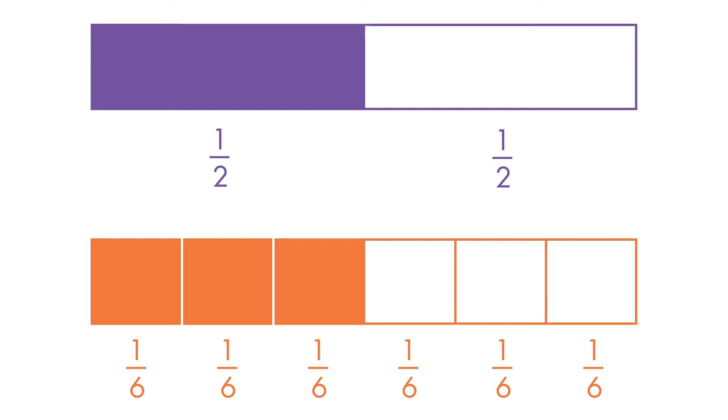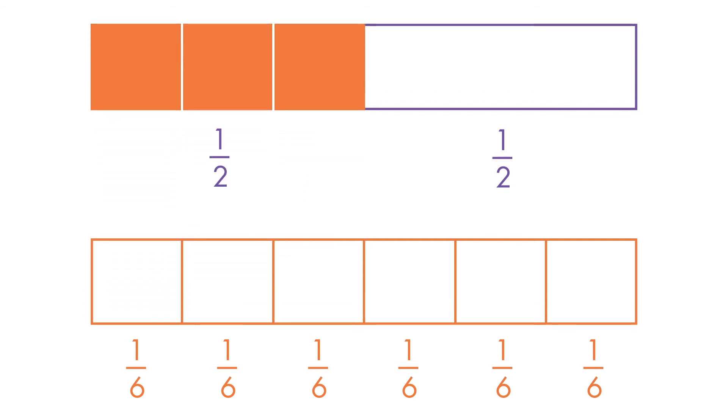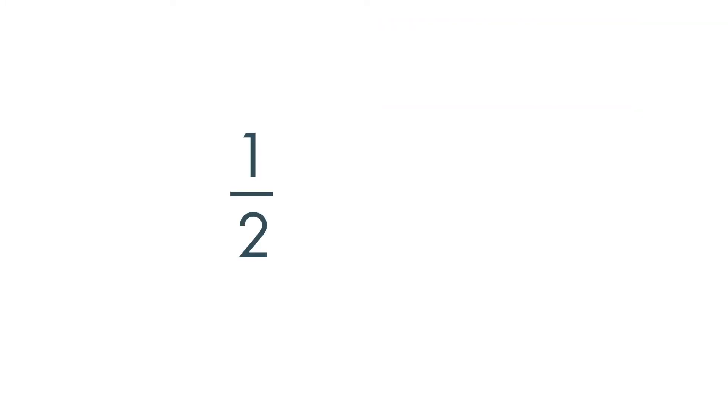We can see that three 1 sixths will fit into 1 half on our fraction bars. So, 1 half divided by 1 sixth is equal to 3.